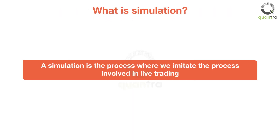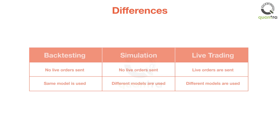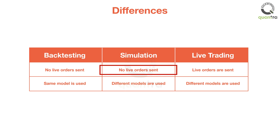A simulation is the process where we imitate the process involved in live trading. In live trading, when you use a machine learning model you will need to perform many tasks which are repetitive and need to be done every time you want to trade. During the simulation, we perform these tasks for every data point and save the performance of the model. The simulation and live trading are exactly the same when it comes to the set of tasks that need to be followed, but in a simulation, we do not send any live orders to a broker and instead manually calculate the performance of the model.